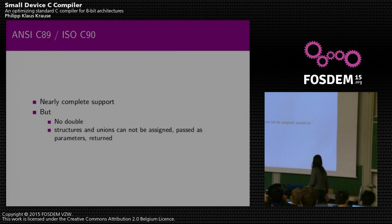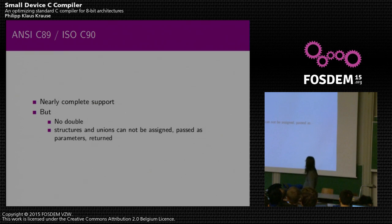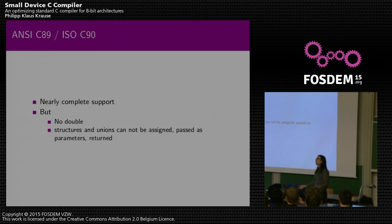The oldest standard is ISO C90, which is nearly completely supported in SDCC now. The two big things missing are: double — if there's a double, we give a warning and treat it like a float — and structures and unions can't be assigned, passed as parameters, or returned yet. Double is rarely used on small systems so it wasn't a top priority. Structures and unions are missing more for historic reasons since many early C compilers didn't support it either. For now, you have to assign them via memcpy.